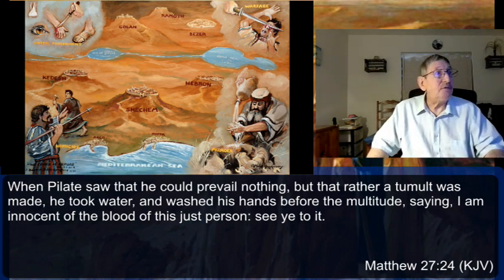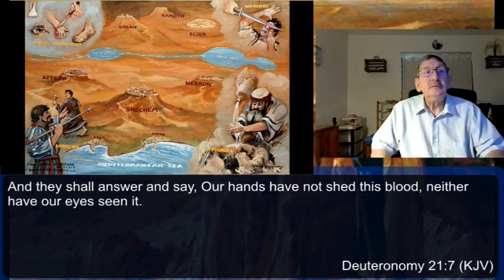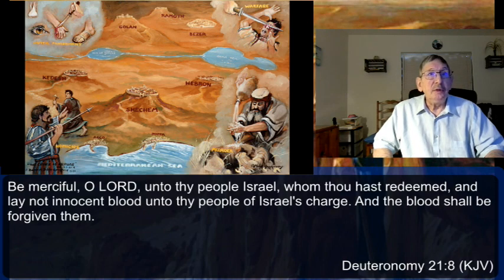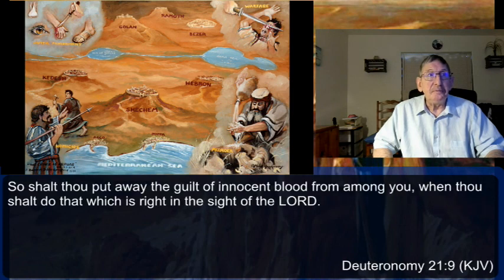Continuing in verses 7 through 9: 'And they shall answer and say, Our hands have not shed this blood, neither have our eyes seen it.' They don't know how the man died. 'Be merciful, O Lord, unto thy people Israel whom thou hast redeemed, and lay not innocent blood upon the people of Israel, and the blood shall be forgiven them.' So shalt thou put away the guilt of innocent blood from among you when thou shalt do that which is right in the sight of the Lord.